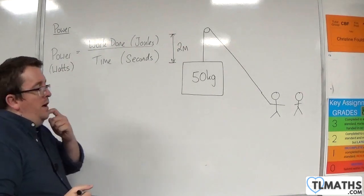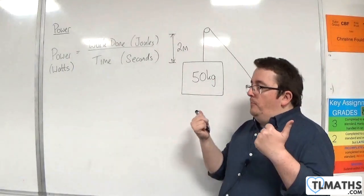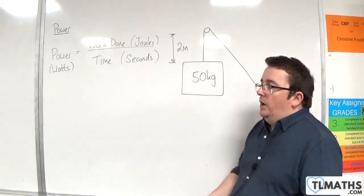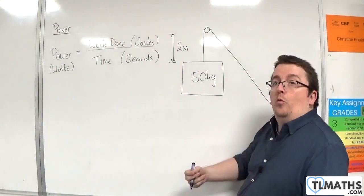So one watt is the power produced when one joule of work is done in one second.